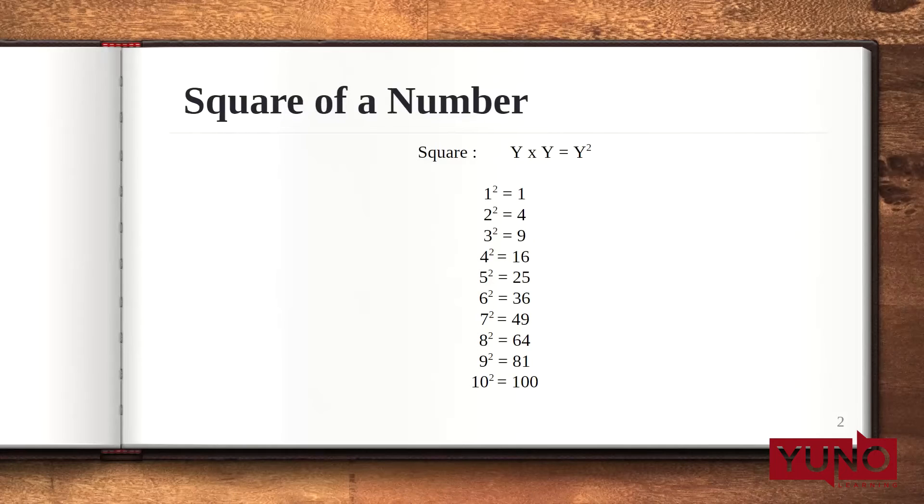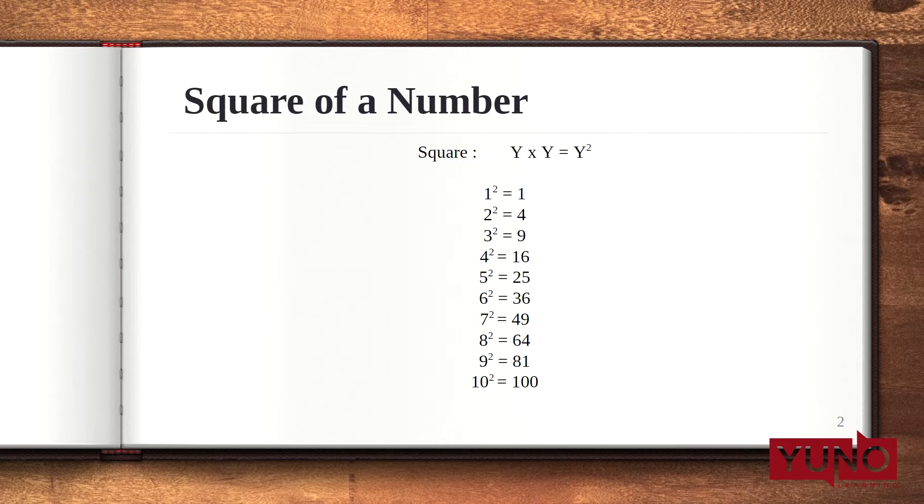Let us see what is a square of a number. The square of a number refers to when we multiply the same number with itself. For example, here y is the number. When I multiply y with y, we get y square. This is the notation in which we write square of a number.